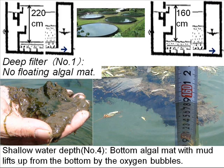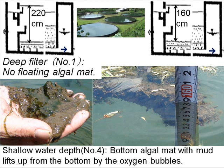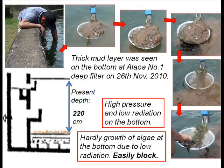There was almost no floating algal mud on the surface of the deep filter at 220 cm depth. However, in the shallow filter of 160 cm, we could see much floating algal mud. The mud holds a large amount of material. The bottom algal mud with mud was lifted up from the bottom by oxygen bubbles. The thick mud layer was thin on the bottom of the deep filter.